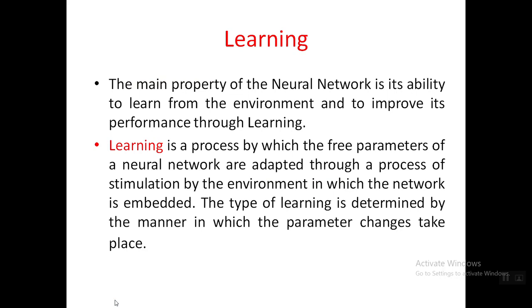In this learning process, the main thing is the free parameters. The free parameters of a neural network are adapted through a process of stimulation — stimulation means giving the input signals. The neural network is provided information from the environment so that it will learn something, meaning the free parameters will change to new values and learn according to the environment.